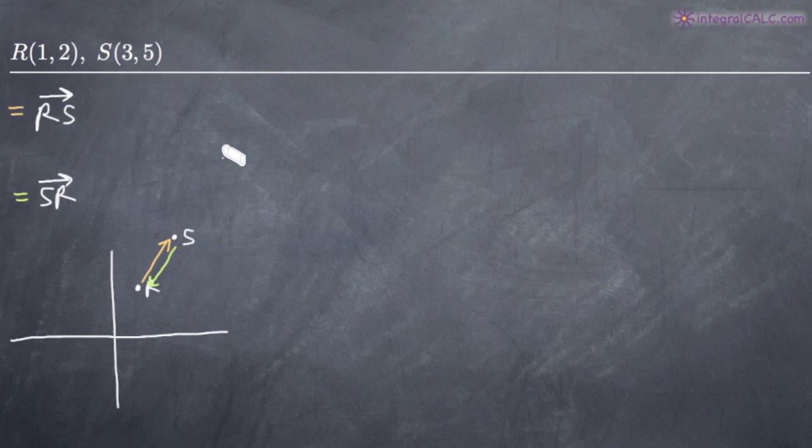In this particular case, we've been asked to find this first vector, R to S. When that's the case, we need to essentially subtract the point R from the point S. We denote vectors with these angle brackets instead of the rounded brackets we're used to when looking at a point.